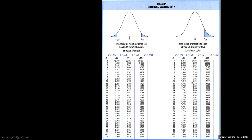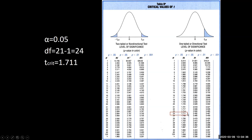We're going to look at the one-tailed side of the table. We had 25 chickens, so our degrees of freedom are 25 minus one, which is 24. We're going to use the alpha equals 0.05 column — that's the assumption we'll always make in this class. With 24 degrees of freedom, our critical value is 1.711. Our rejection region is T greater than or equal to 1.711. You could write it that way, write more than 1.711, or draw it on a picture with RR marked.